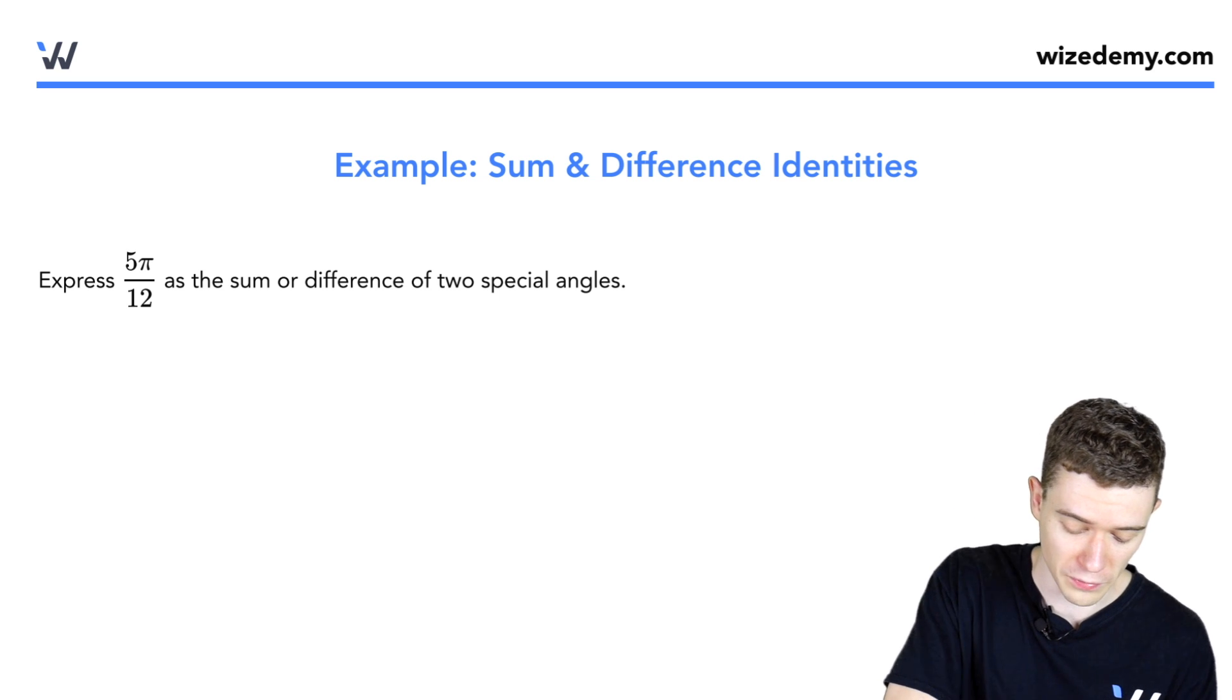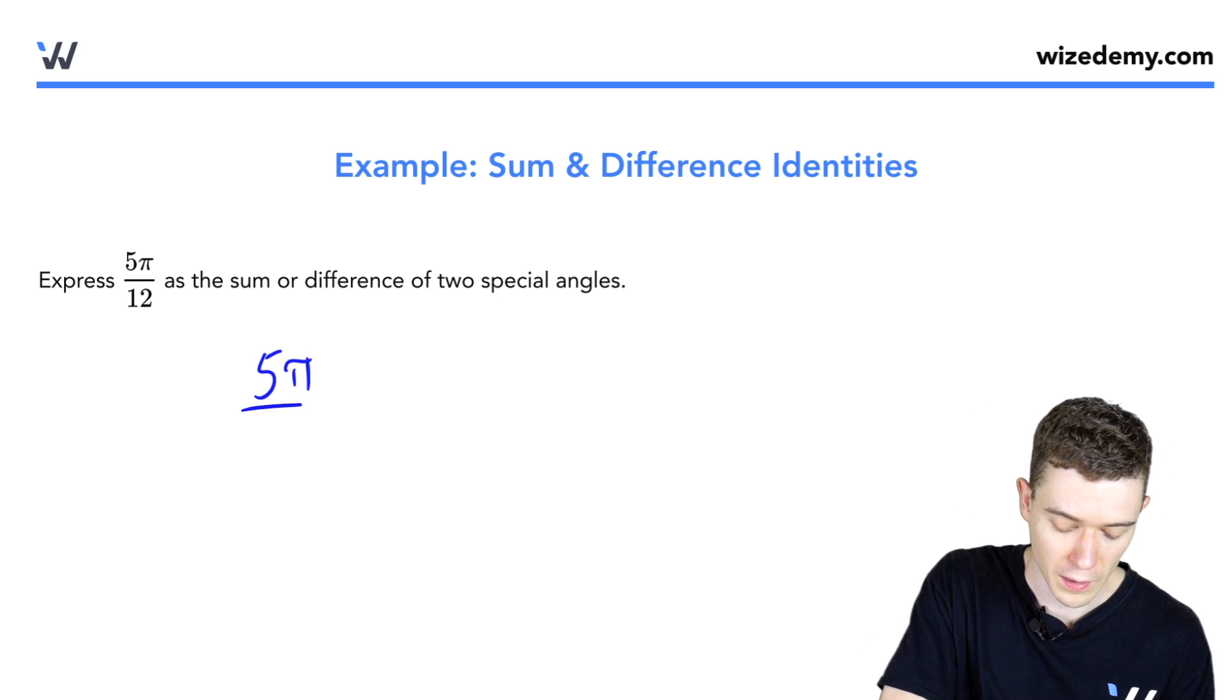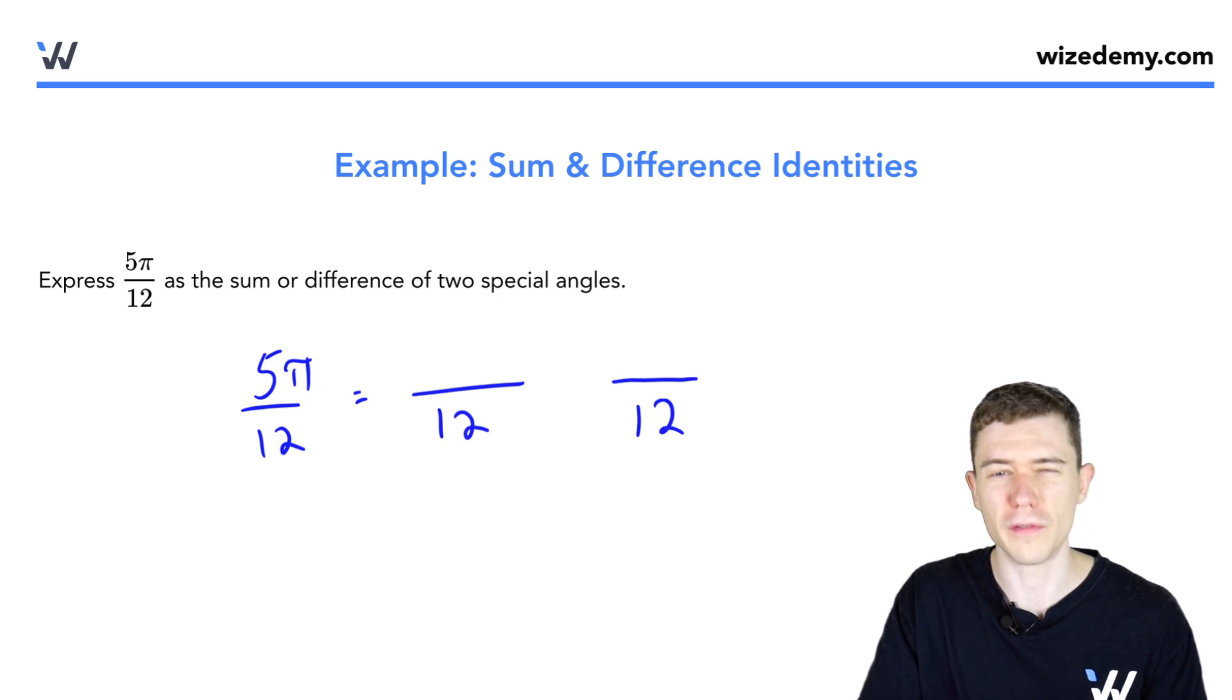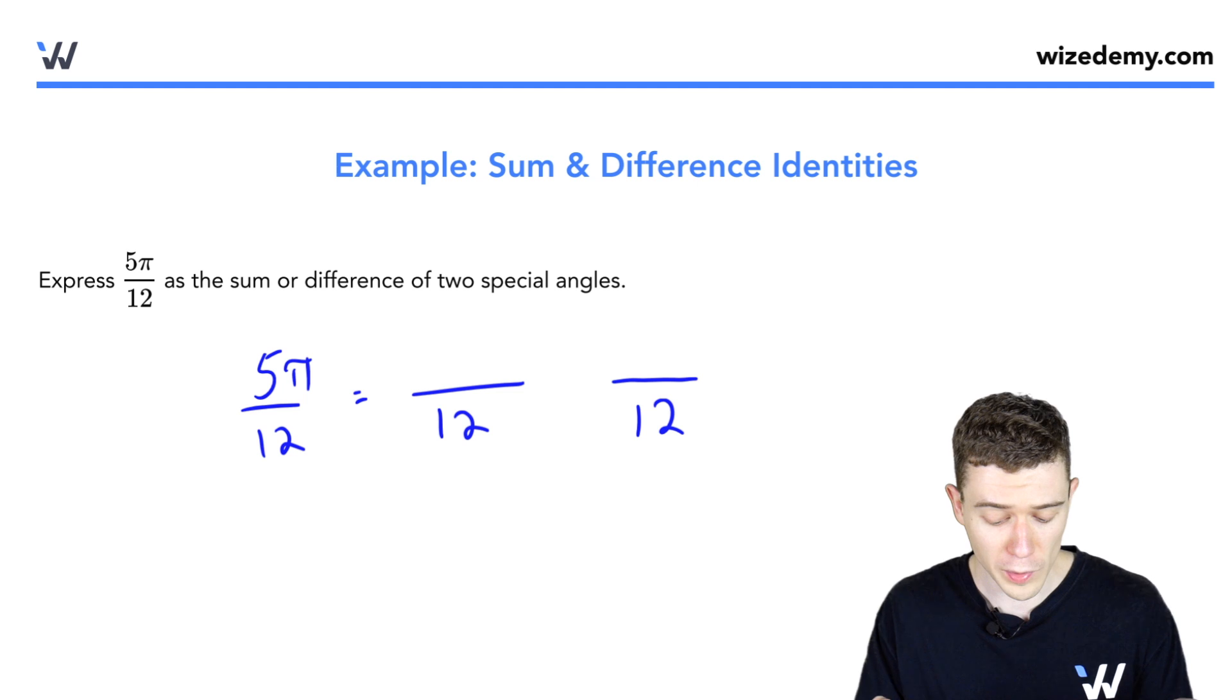So, 5π/12, how might we break that up? Well, this is going to be denominators of 12. That would be the first way we can break this up. How can we break up 5?